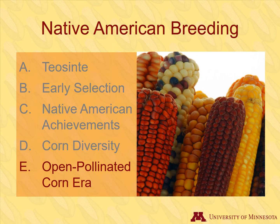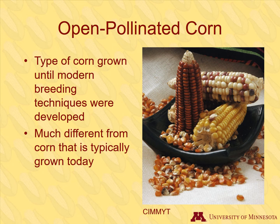As Europeans arrived in the New World, they encountered corn, a new crop that was very foreign to them. Ultimately, they benefited greatly from the corn breeding work that Native American breeders had done. In this section, we will discuss the transition from Native American corn to the next era of corn breeding. Native Americans developed hundreds of diverse types of corn — all these corn types are what we call open-pollinated varieties. Open-pollinated corn types are much different than the type of corn that is predominantly grown now; very little of this type of corn is grown today.